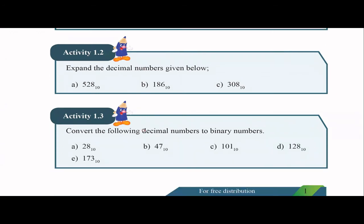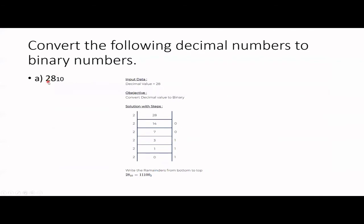Activity 1.3: convert these decimal numbers to binary numbers. To convert a decimal number to binary, you start dividing the number repeatedly by 2. For example, take 28 and divide by 2. Your quotient is 14 and the remainder is 0 — it's an even number so no remainder. Continue dividing like that; divide 14 by 2 again.